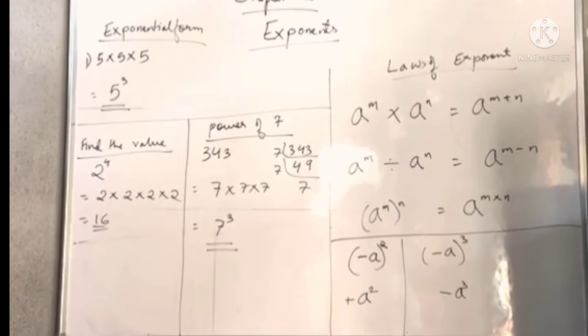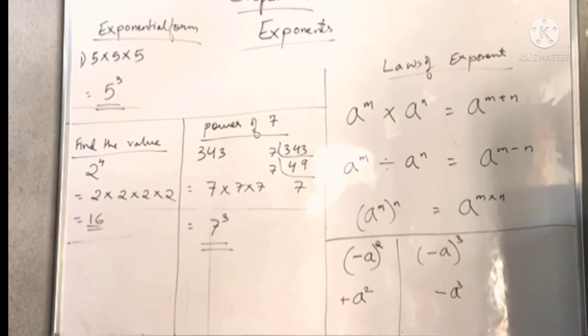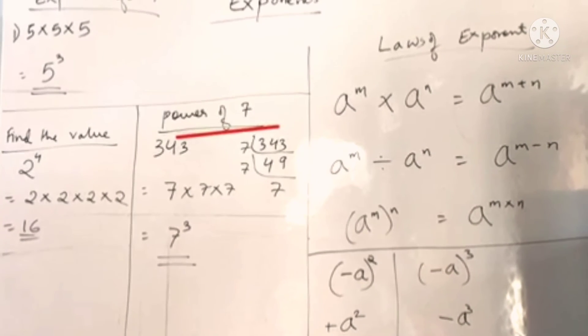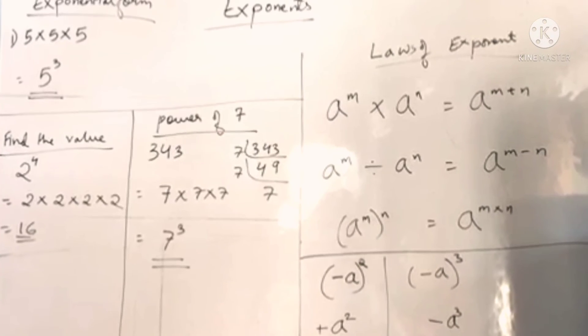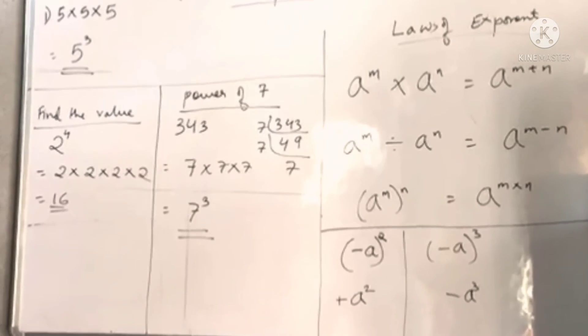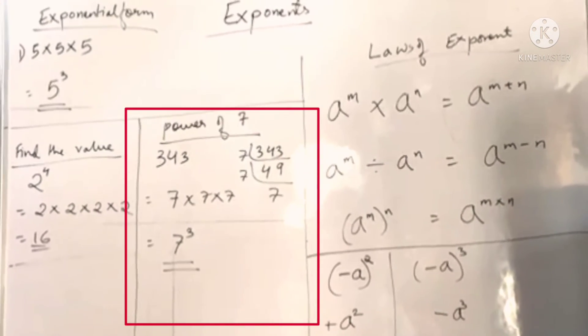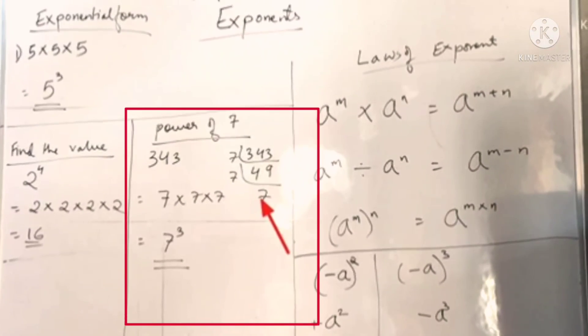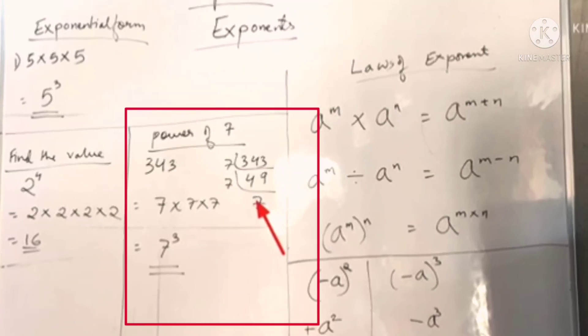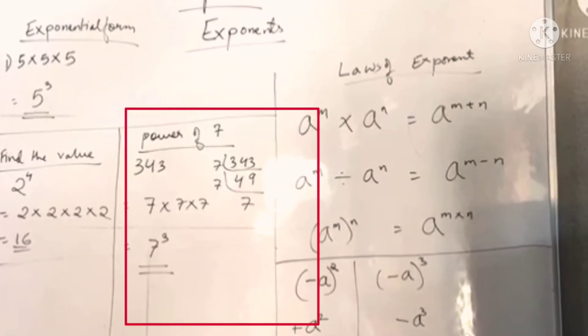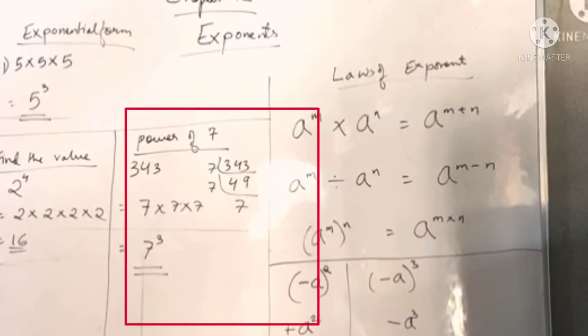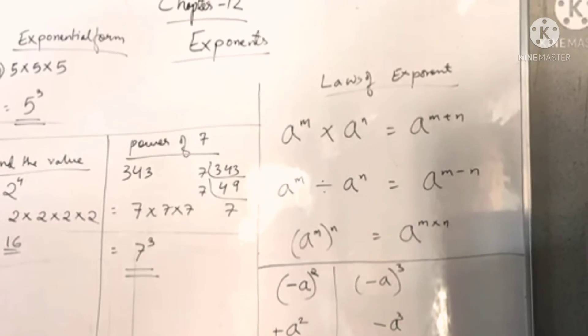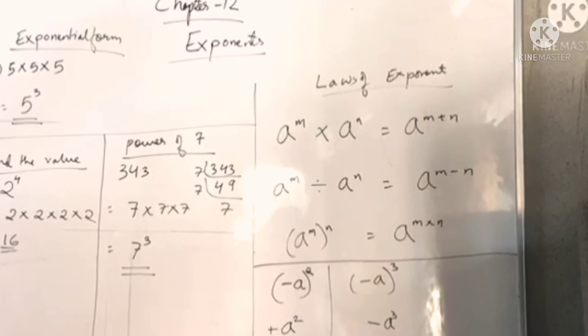Similarly, the next example is given as power of seven. You are asked to break the number and convert it into the power of seven. To find any number in terms of power, we factorize the given number. When we factorize 343, it can be factorized by seven three times, so the power of seven is three. When we multiply seven three times, we get 343.